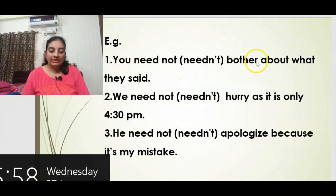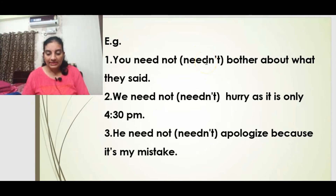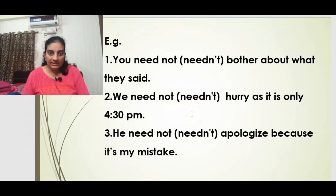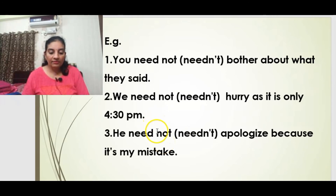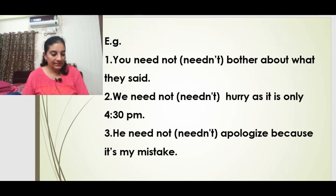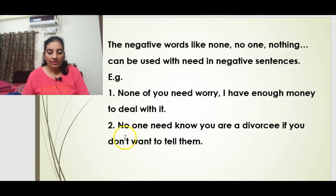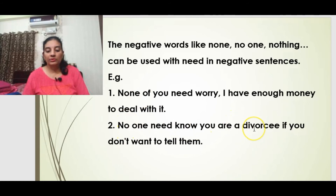Examples of need as a modal with 'not' contracted to 'needn't': 'You needn't bother about what they said.' 'We needn't hurry as it is only 4:30 pm — we have a lot of time.' 'He needn't apologize because it is my mistake.' Additionally, negative words like none, no one, and nothing can be used with need: 'None of you need worry — I have enough money.' 'No one need know you are a divorcee if you don't want to tell them.'